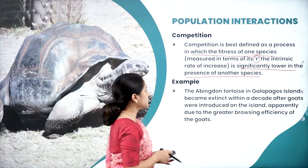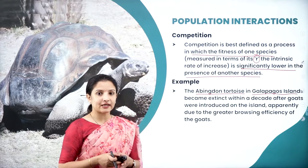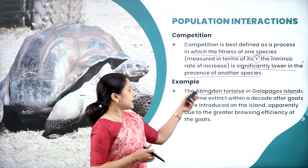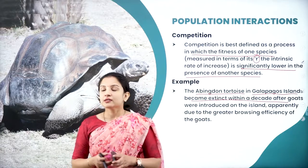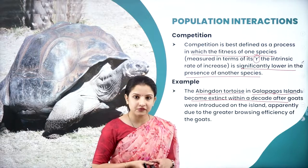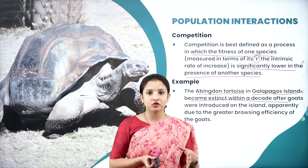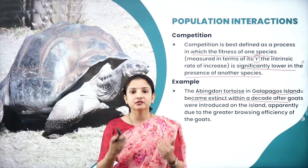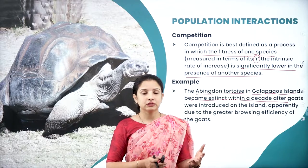Those organisms capable of surviving and reproducing are considered fit. The best example to understand this is the Abingdon tortoise of Galapagos Island. Darwin had visited Galapagos Island and studied the finches. This Abingdon tortoise actually became extinct within a decade after goats were introduced. Goats are voracious feeders — they keep munching on the grass and will never stop, however much grass is available.